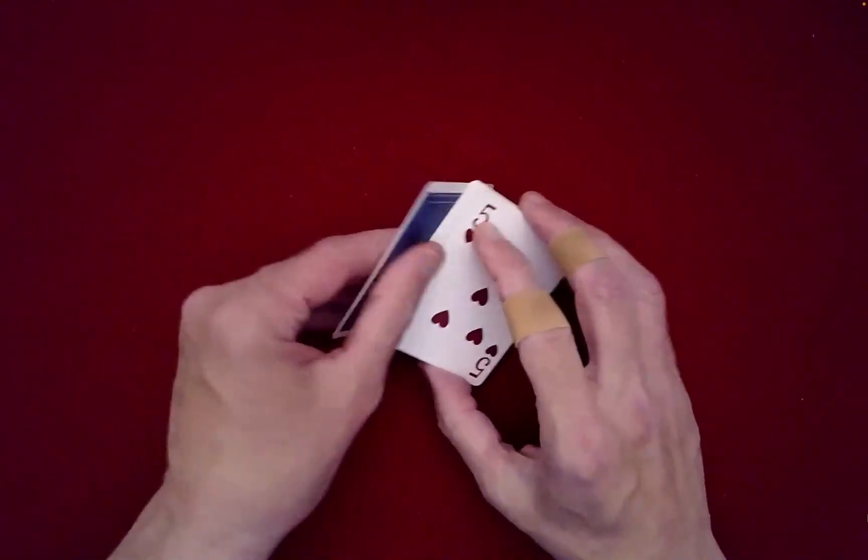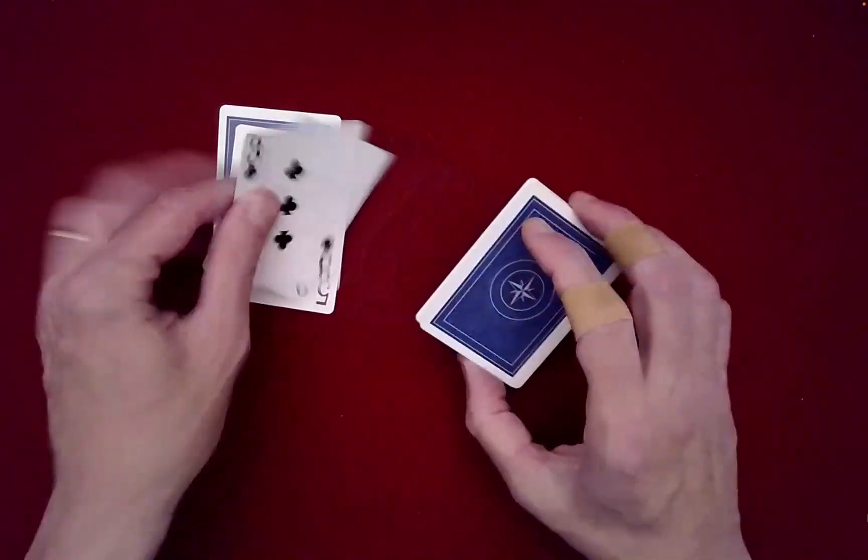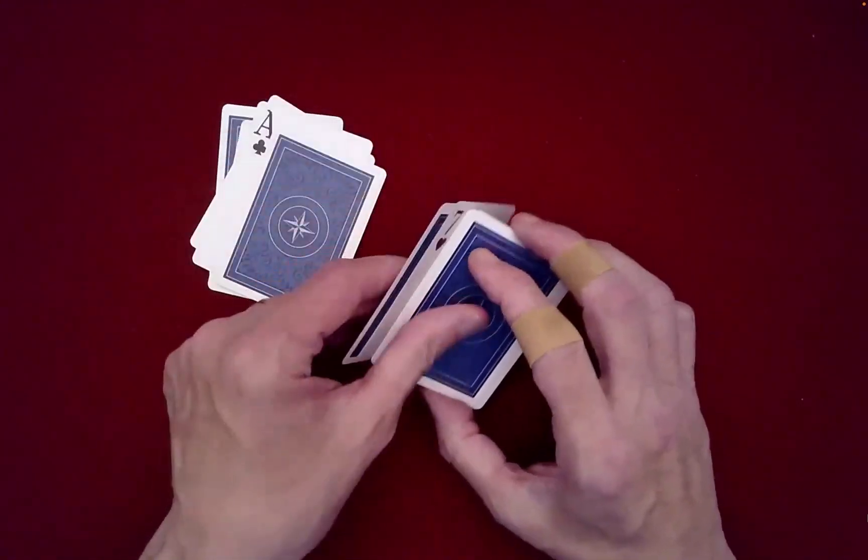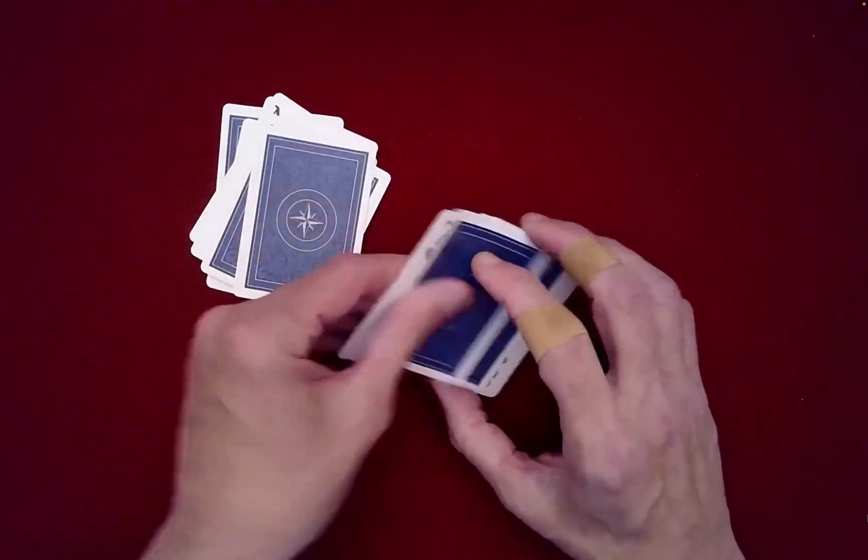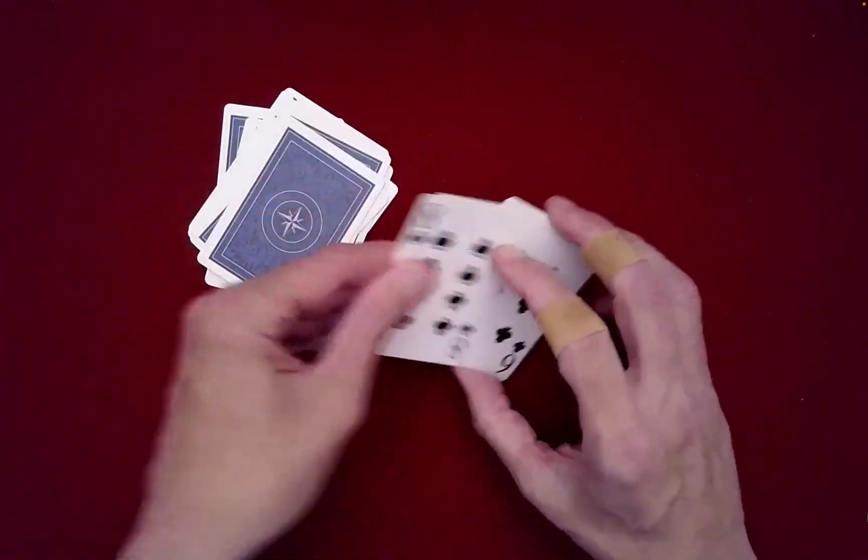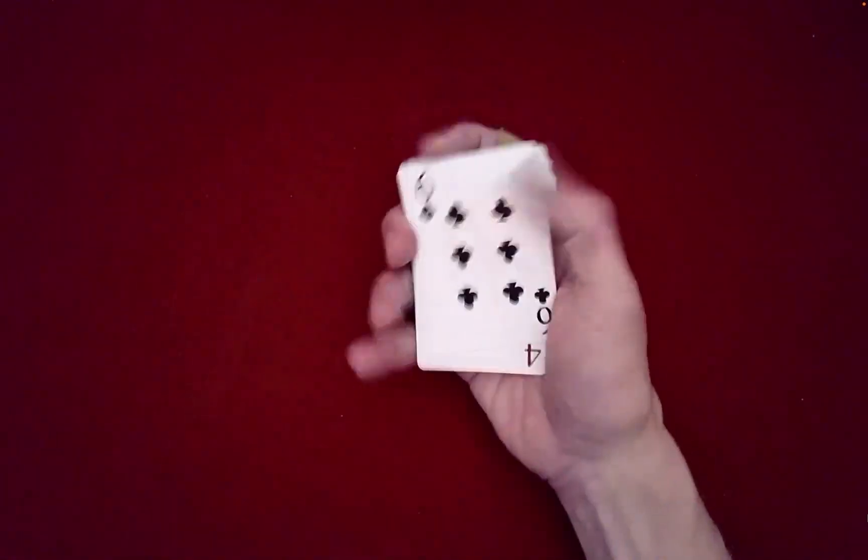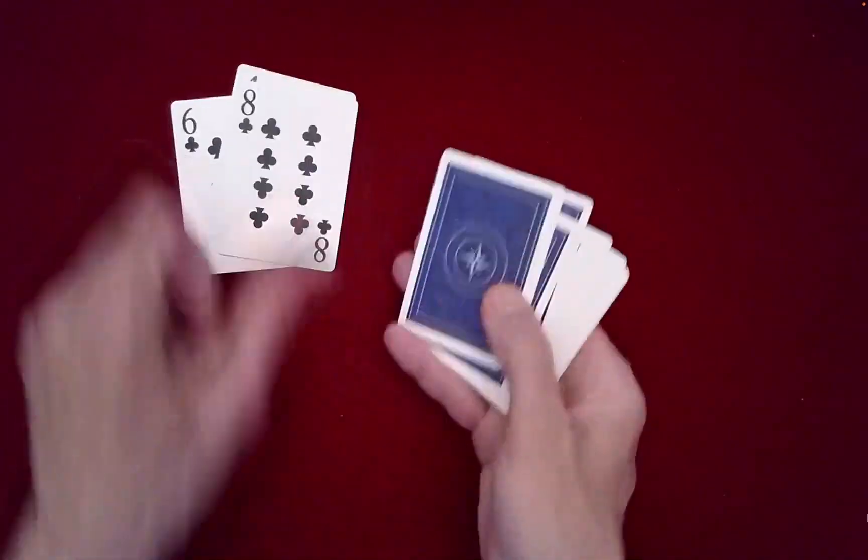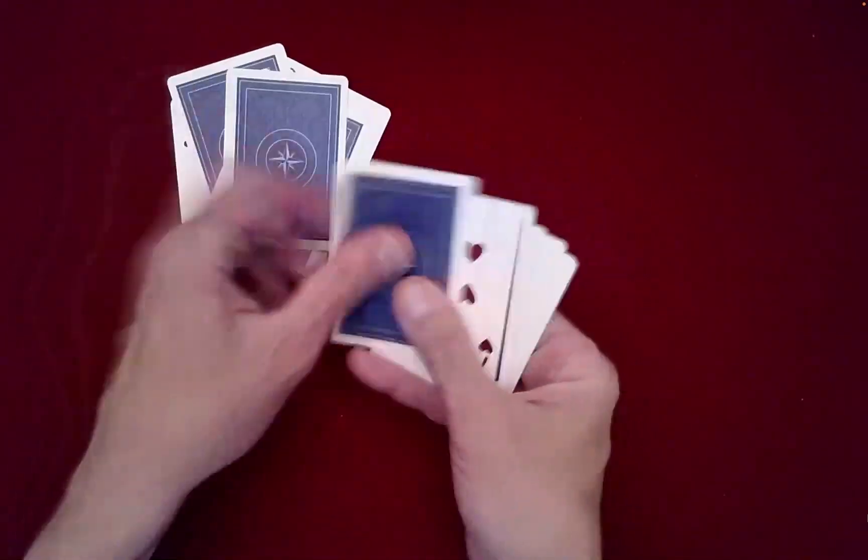And now I'm going to Klondike Shuffle a second time. And these cards are getting, as you can see, they're getting well mixed here. You can actually see that happening. And then I'm going to deal out just half the cards. Three, four, five, six, seven, eight.